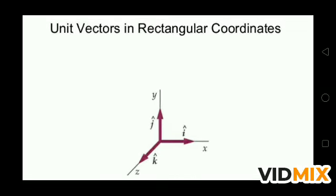Now, what is a unit vector? A vector divided by its magnitude is called a unit vector. So vector A divided by |A| gives the unit vector — meaning a magnitude of one unit. In rectangular coordinates, the unit vectors are i-cap, j-cap, and k-cap. i-cap is directed along the x-axis, j-cap along the y-axis, and k-cap along the z-axis. The magnitude of each is one. So i-cap indicates direction along x with value one, j-cap along y, and k-cap along z.